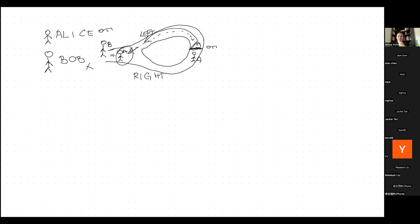There are other examples too. Let me move from the whiteboard to my camera. You see that I'm holding arrows of different colors.